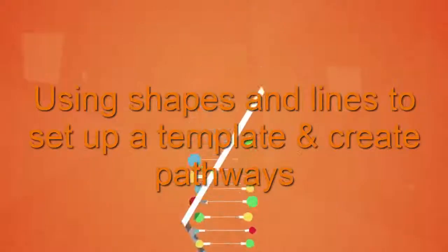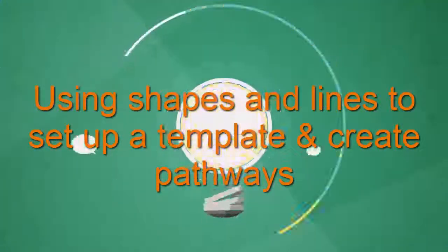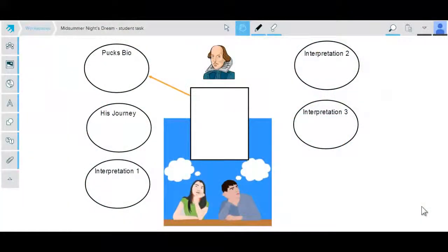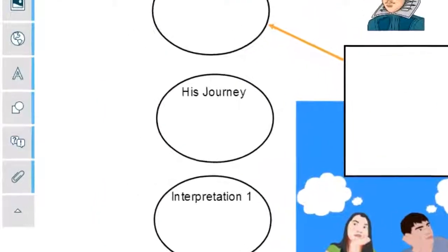When creating a typical Module 2 template, it can be useful to use shapes and lines to set up your template to help define a central meeting point and also to allocate space on the same document for students to contribute to.